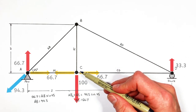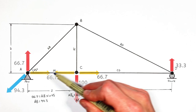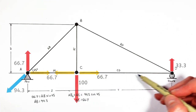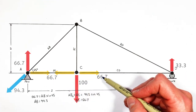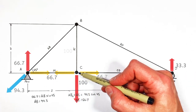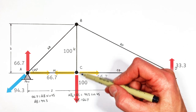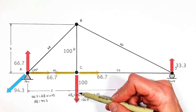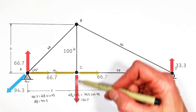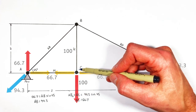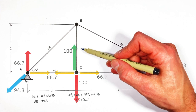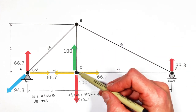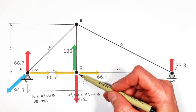Vertically at joint C, we see a similar result. Since both AC and CD are horizontal beams, they can't affect what's happening vertically. So if there's a downward load of 100, BC has to pull up with a force of 100; otherwise, the joint would move vertically.